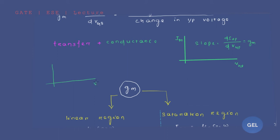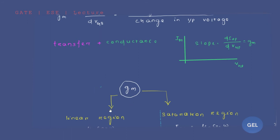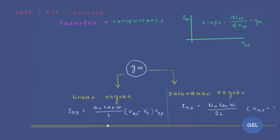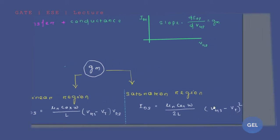Now GM can be calculated for two regions. If you look at the output characteristics curve — VDS versus IDS — we have two regions: one is the linear region and another is the saturation region. We are going to calculate GM for the linear region and for the saturation region. We know the current values for both regions have been calculated in our previous video lectures.